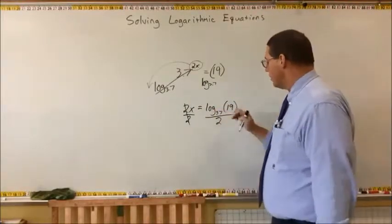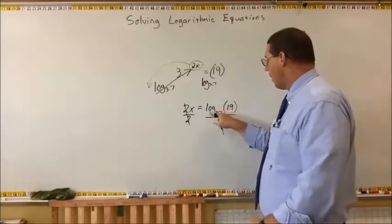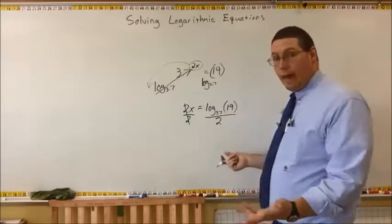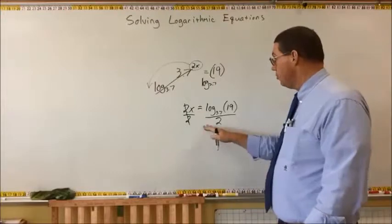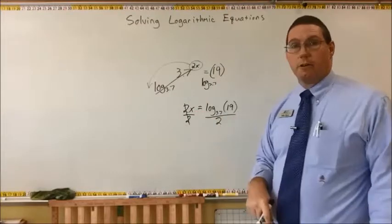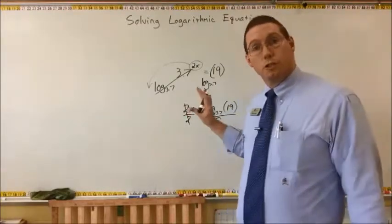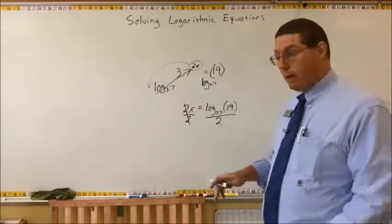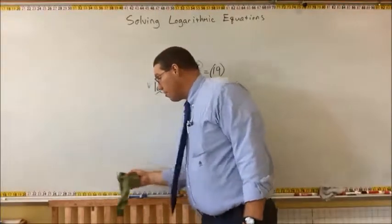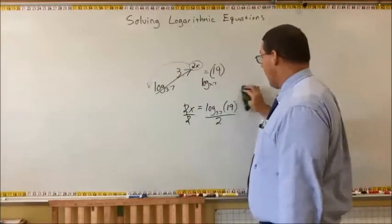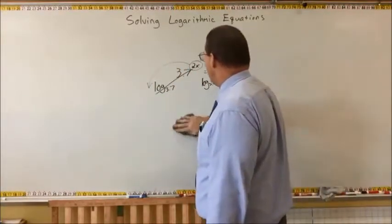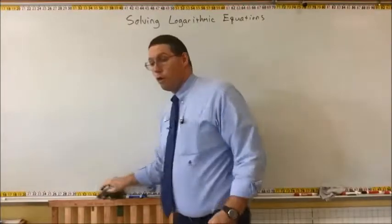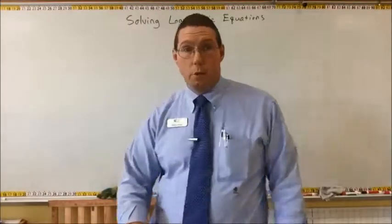You could do log 19 divided by log 3.7, then divide that value by 2, and you would have your value of x. We're just reviewing solving an exponential equation, so that you can understand how to solve a logarithmic equation.